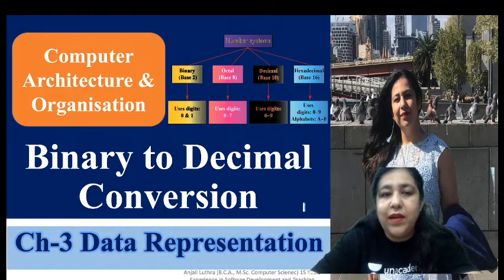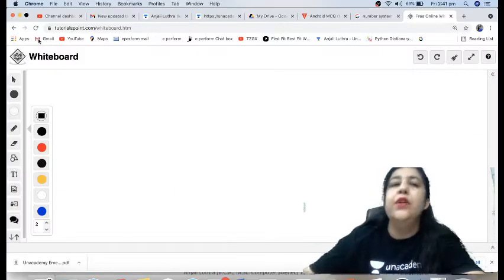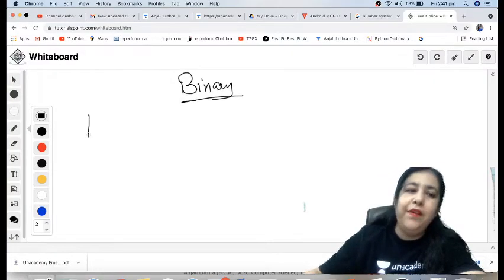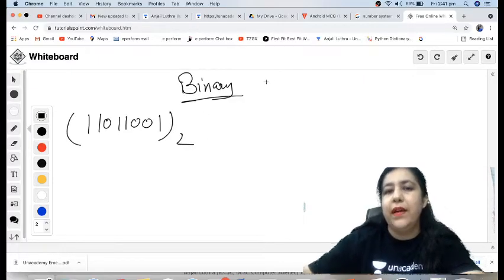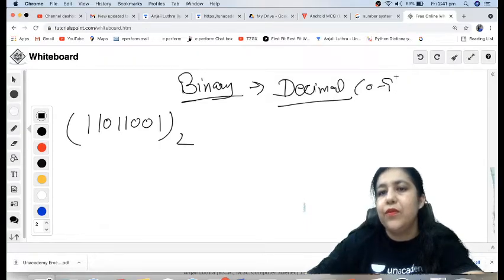And in today's class we will do how to convert. So let's start. So binary number. The first thing is you know what binary number is. Any number written in this form. This is a binary number. You have to convert it. Which one? Convert it to decimal. That means zero to nine digits where you can use it.